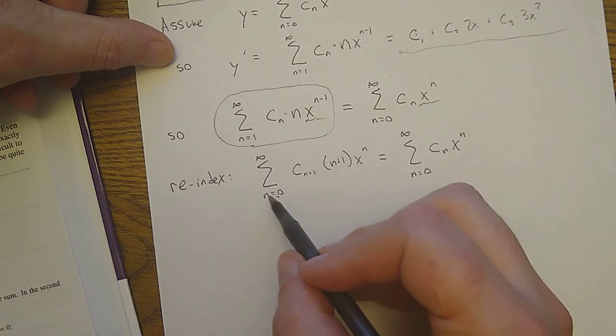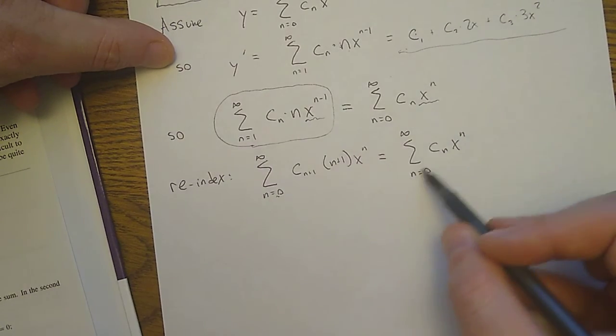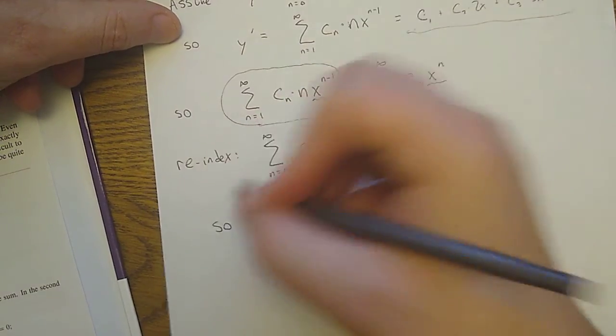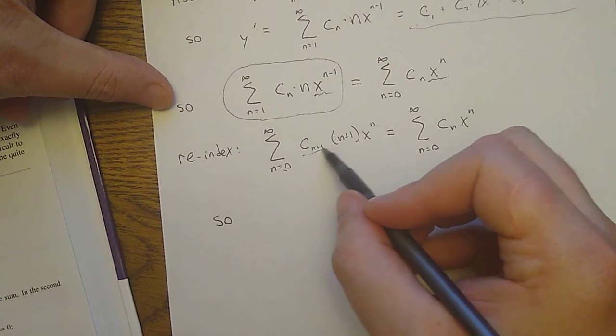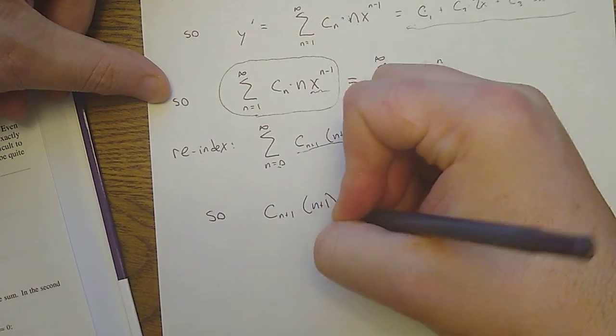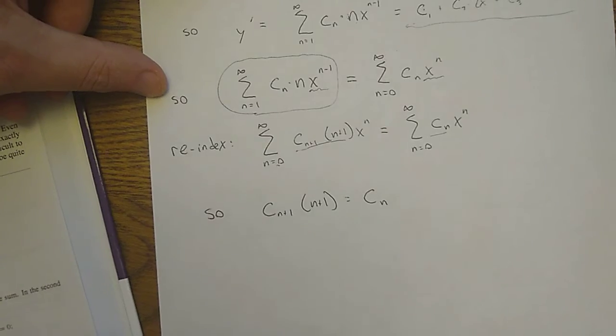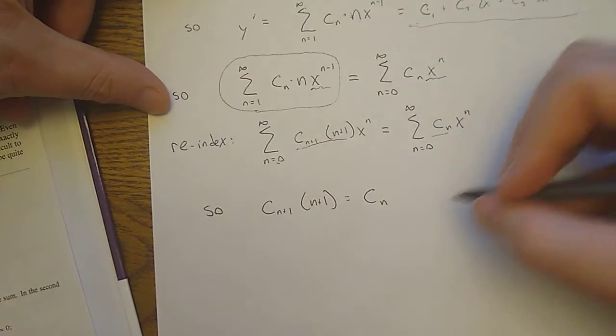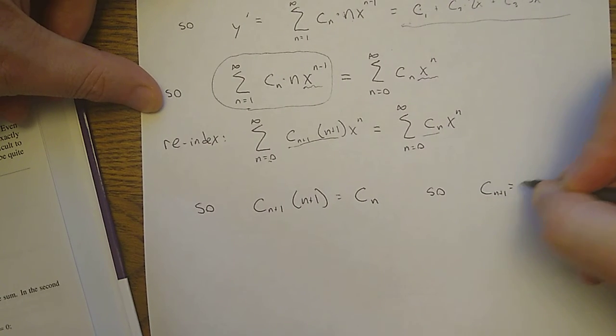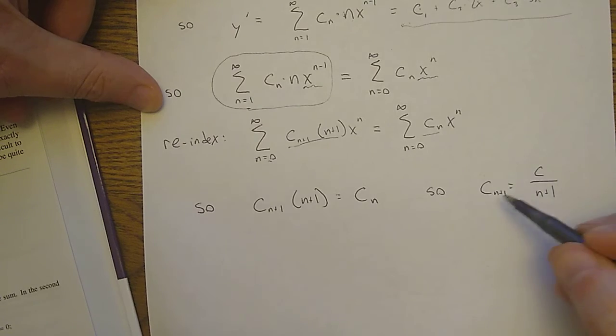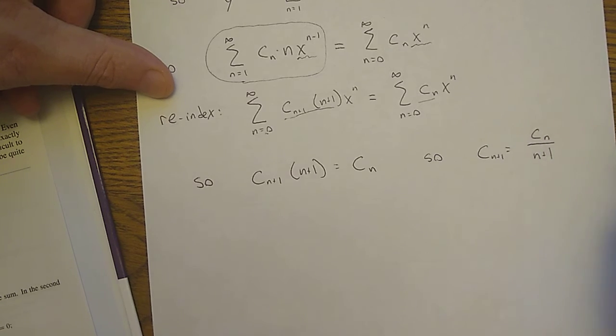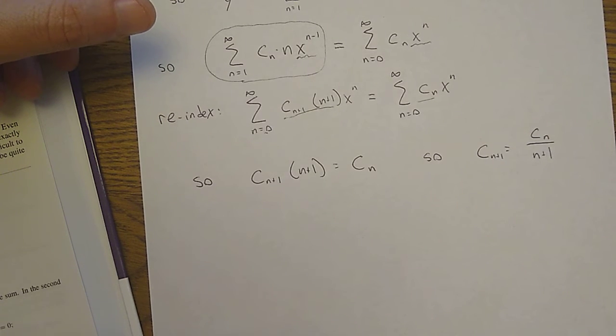Anyway, now that we're here, a lot of this is lining up. This is a sum from n equals zero to infinity. This is a sum from n equals zero to infinity. I've got x to the n here. I've got x to the n here. So what I was talking about, where you equate coefficients, this equals this. So what this is good for is we can get what we call a recursive formula, like I can solve for, oops, this is c sub n, I can solve for c sub n plus 1 in terms of c sub n.